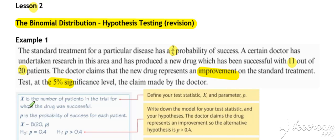X follows a binomial distribution. The p-value being tested is two-fifths. So H0 is P equals 0.4, and we are testing against an improvement. Therefore, our alternative hypothesis is P is greater than 0.4.